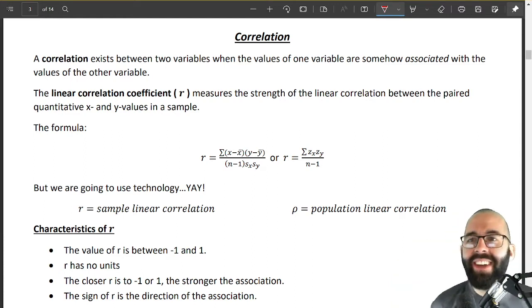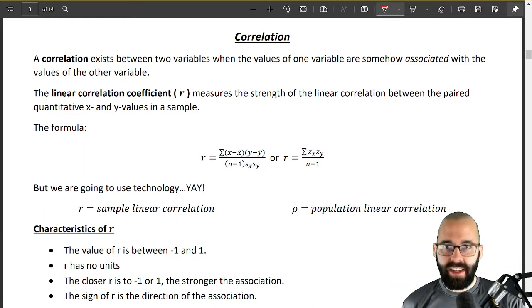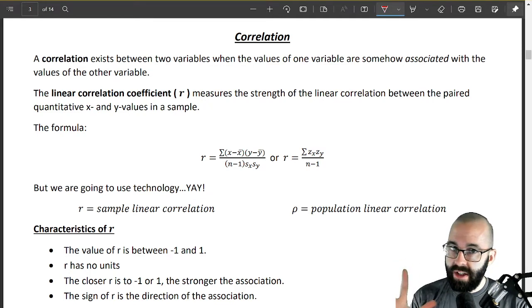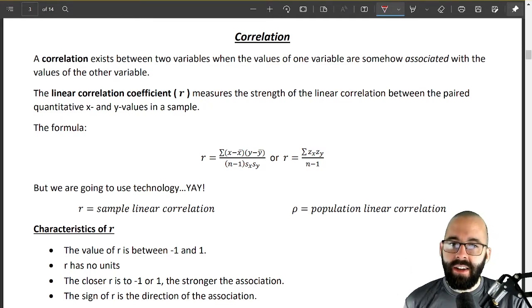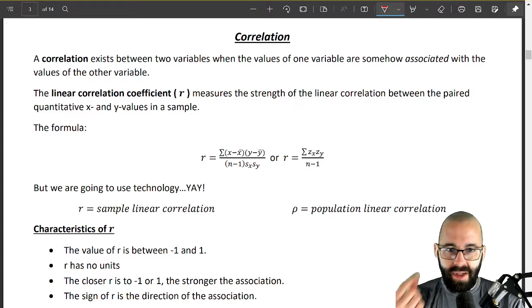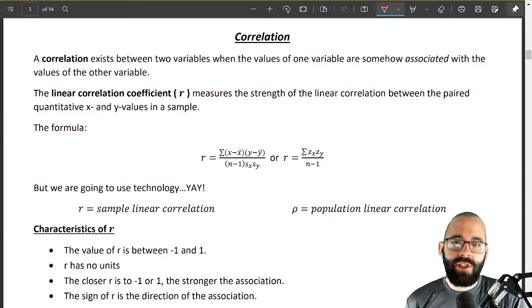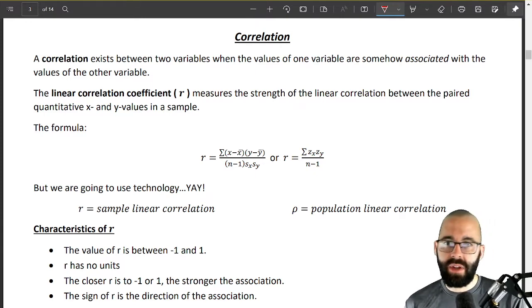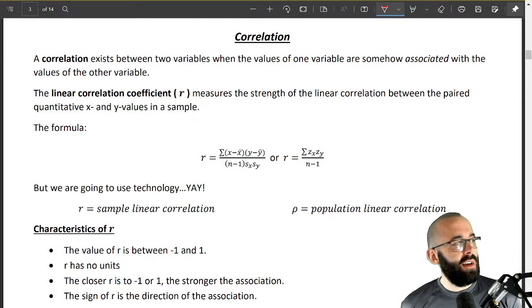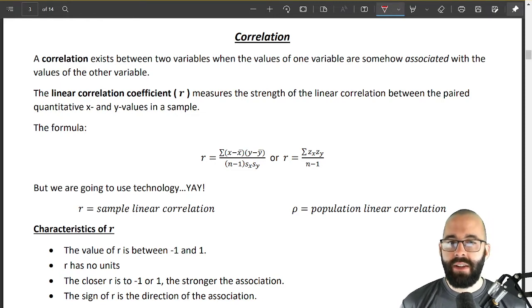So correlation exists between—again, not causation. Correlation is not causation, doesn't mean something causes, just means they're related. Correlation exists between two variables when the values of one variable are somehow associated with the values of the other variable.